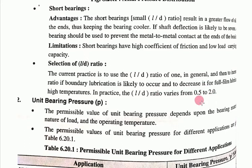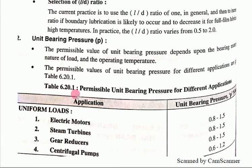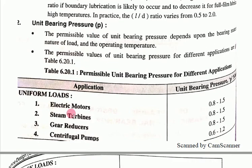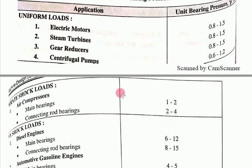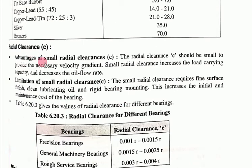In general, the L/D ratio should be between 0.5 and 2.0. For unit bearing pressure, a chart is used for selection. For example, for an electric motor, unit bearing pressure is 0.8 to 1.5 N/mm²; for a steam turbine, different values are given in the chart.